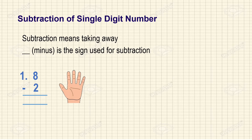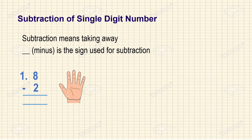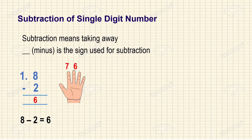It is not possible to subtract a bigger number from a smaller number. Here they are given 8 minus 2. We are going to take the 2 away from 8. So we need to keep 8 on our mind. We tell the numbers in reverse order before 8: 7, 6. So 8 minus 2 is 6.